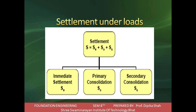Secondary consolidation is denoted as Ss. Reduction in volume continues at a very slow rate even after the excess pore water pressure developed by the applied pressure is fully dissipated and primary consolidation is completed. This additional reduction in volume is known as secondary consolidation. After water and voids are already removed from soil particles, the slow motion reduction that happens afterwards is secondary consolidation - it is not very quick and occurs very slowly.